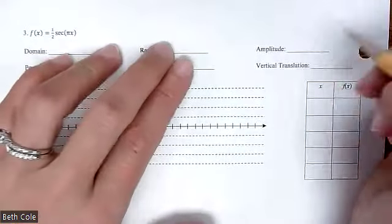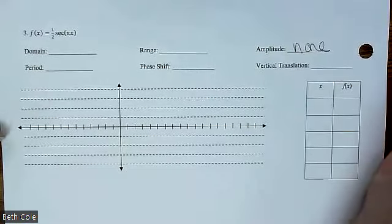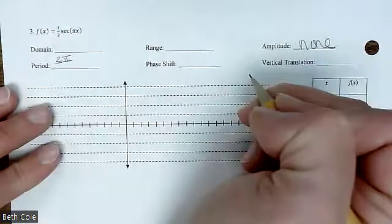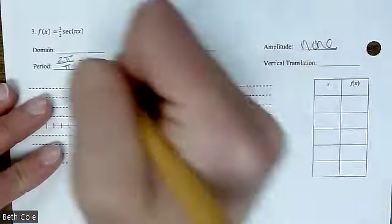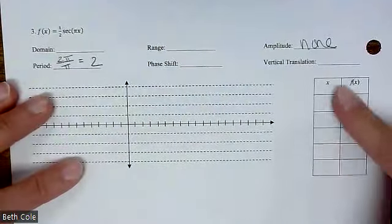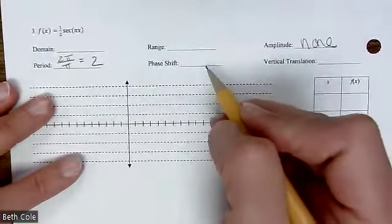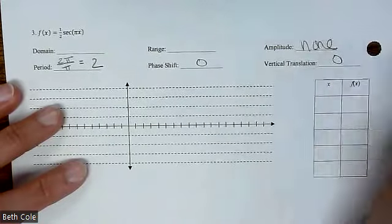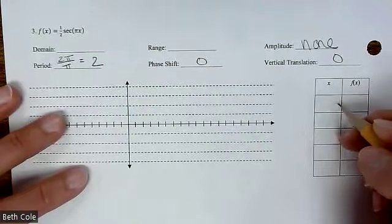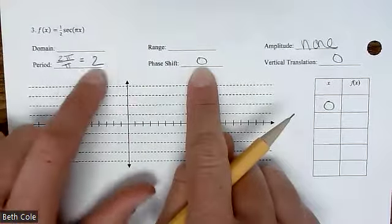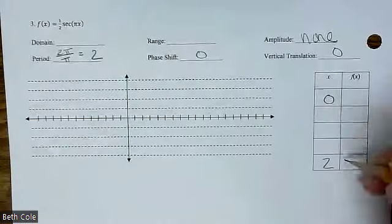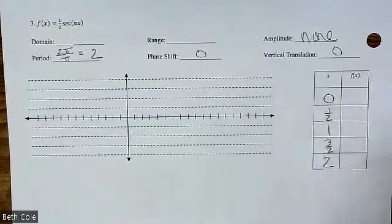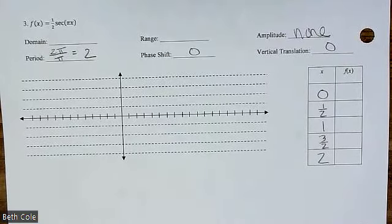Same process, only difference is we're going to flip all of the x values. Looking at this one, amplitude is none — only for a wave. Period: two pi over pi. What happens there? It's just two. What that means in your table and on your axis: there will be no pi — the pi is going to be gone. Phase shift: none, zero or none. Vertical translation: none. So where do you start? Zero — you don't need to put pi, there won't be any. Then you add two — what's halfway between zero and two? One. Then one half, and three halves.